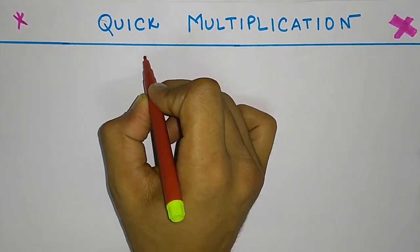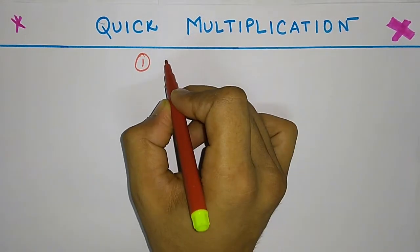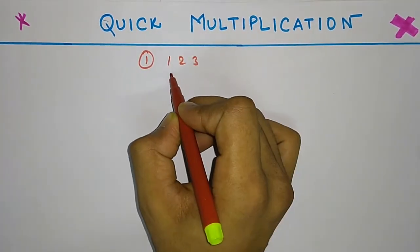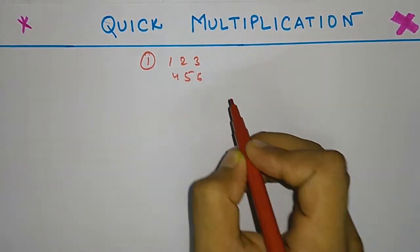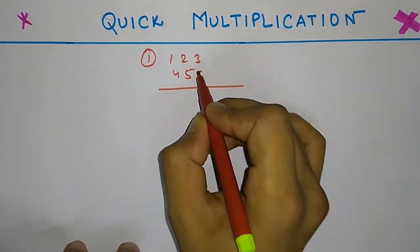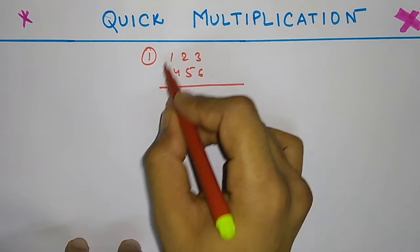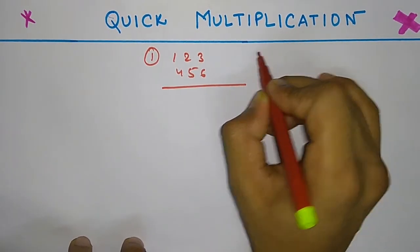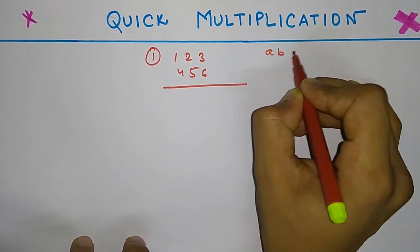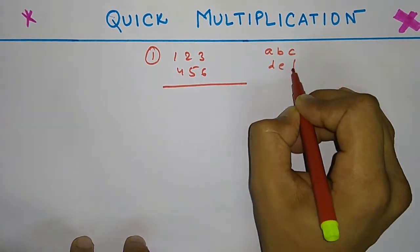Moving on, I am going to multiply three digit numbers. The simplest will be 123 and 456. How are we going to proceed in these cases?